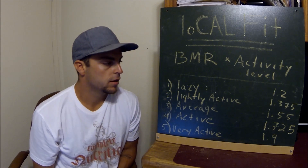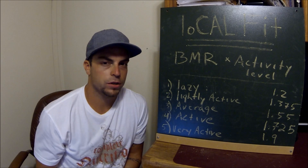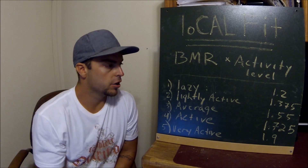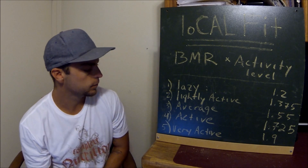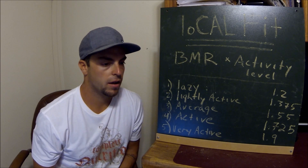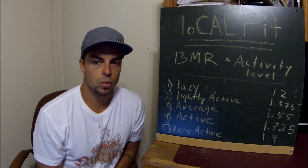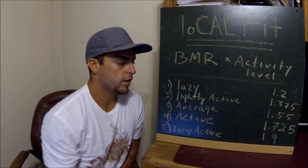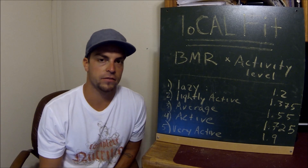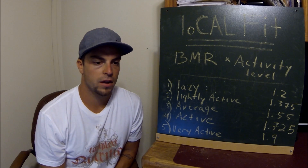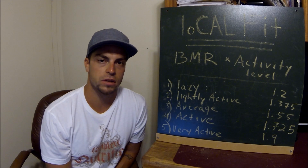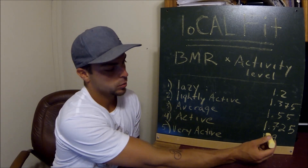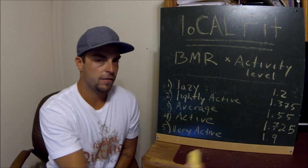Number two is lightly active — typically somebody who works out maybe once a week or has a desk job and doesn't get on their feet too much. Multiply by 1.375. Number three is the average person — they work out two to three times a week and have a job that's not too active, but they get some exercise: multiply by 1.55. Number four is active — this person works out four to six times a week or has a somewhat physically demanding job like a mailman or someone on their feet all day: multiply by 1.725.